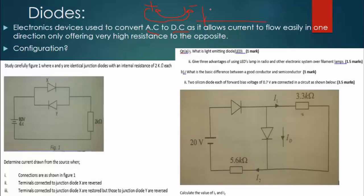That's the nature of AC. In such a way, if you represent it in sinusoidal form, it is variating like that. However, for DC, it is always one direction. That's DC. So, conversion of alternating current to direct current is achieved by diodes. The electronic devices used to convert alternating current to direct current, as it allows current to flow easily in one direction, only offering very high resistance to the opposite.